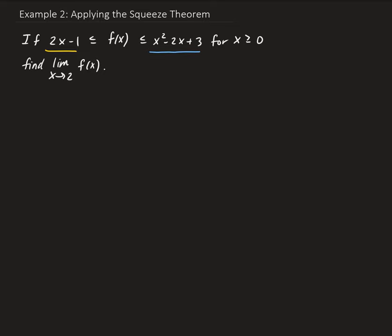So what we can do is apply the squeeze theorem here. We take the limit as x approaches 2 of 2x minus 1, and doing a direct substitution that will give us 3.